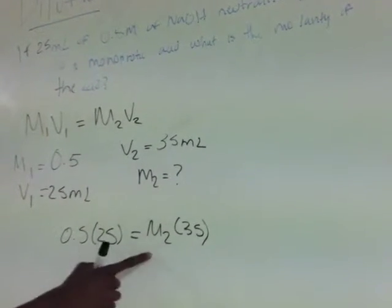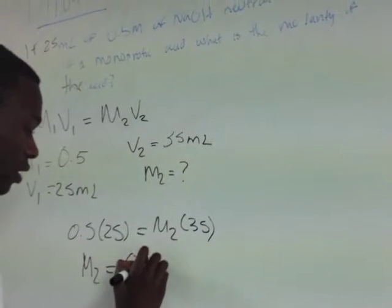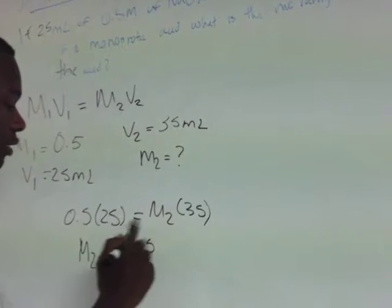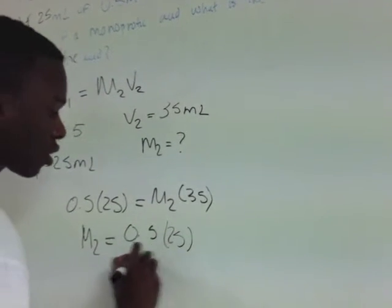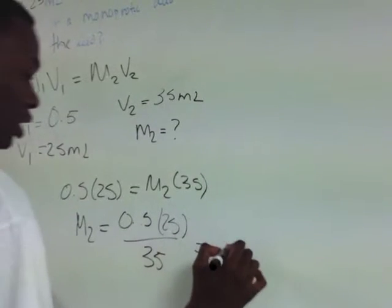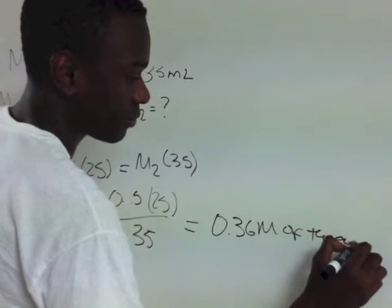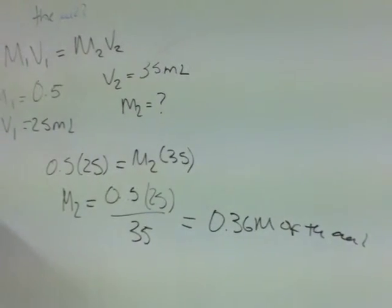Now we isolate M2 by dividing: 0.5 times 25 divided by 35, which gives us 0.36 molar for the acid. And that is how you do dilution.